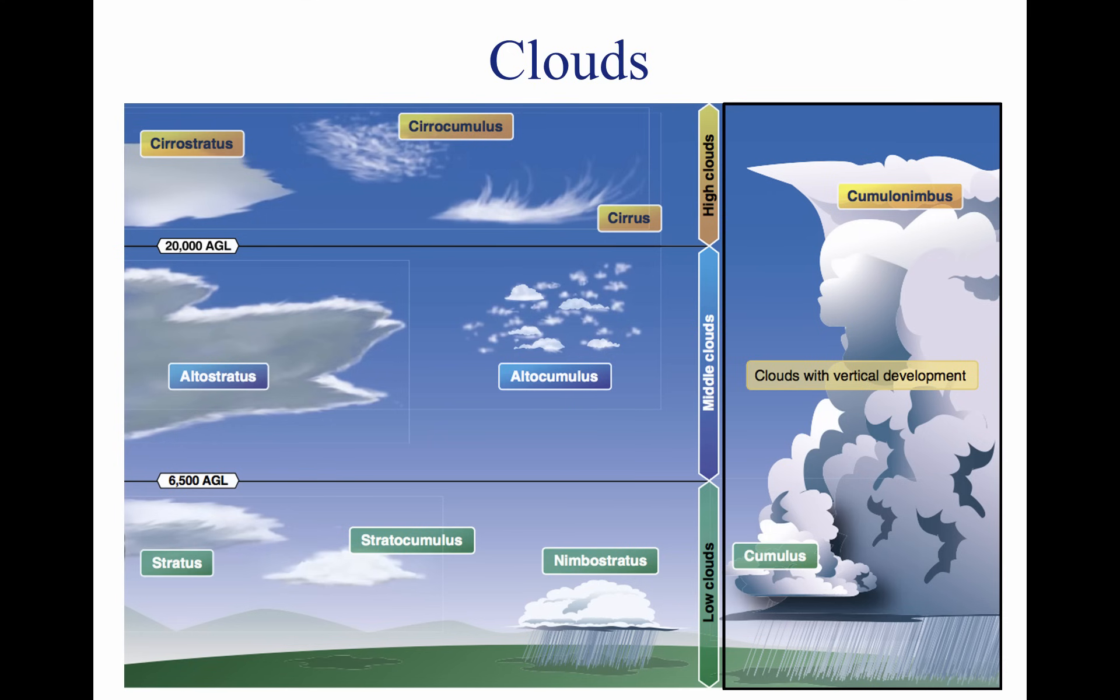To pilots, the cumulonimbus cloud is perhaps the most dangerous cloud type. Since rising air currents cause cumulonimbus clouds, they are extremely turbulent and pose a significant hazard to flight safety. For example, if an aircraft enters a thunderstorm, the aircraft could experience updrafts and downdrafts that exceed 3,000 feet per minute. In addition, thunderstorms can produce large hailstones, damaging lightning, tornadoes, and large quantities of water, all of which are potentially hazardous to aircraft.